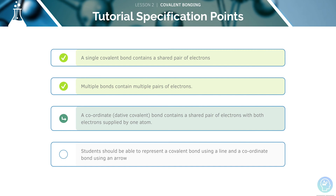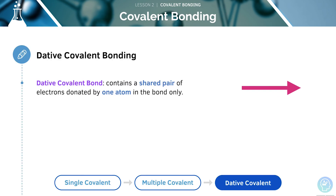Let's move on to our next learning objective, covering dative covalent bonding. In a dative covalent bond, both the electrons in the electron pair will be donated by one of the atoms from the bond.